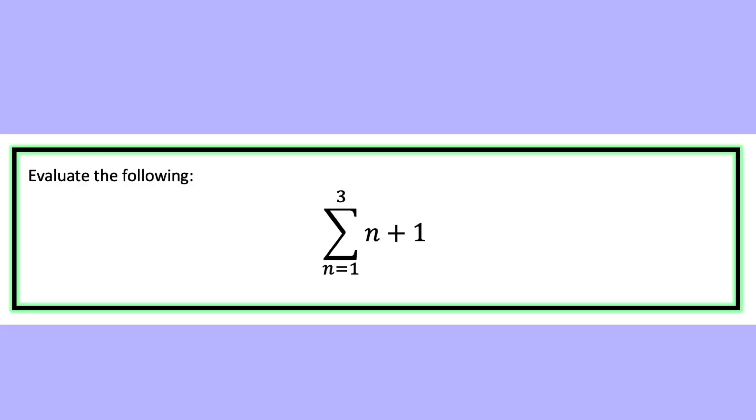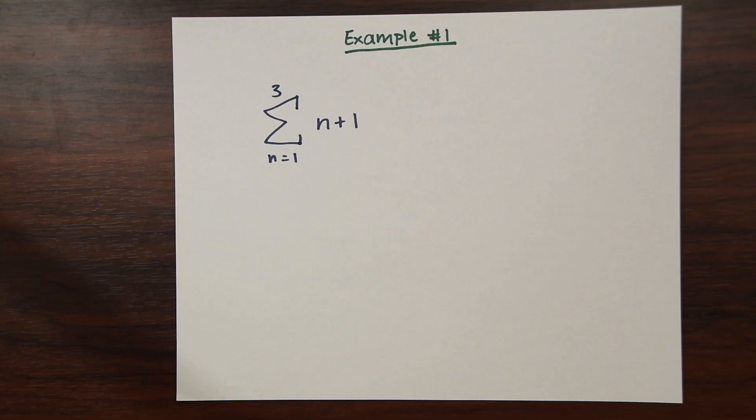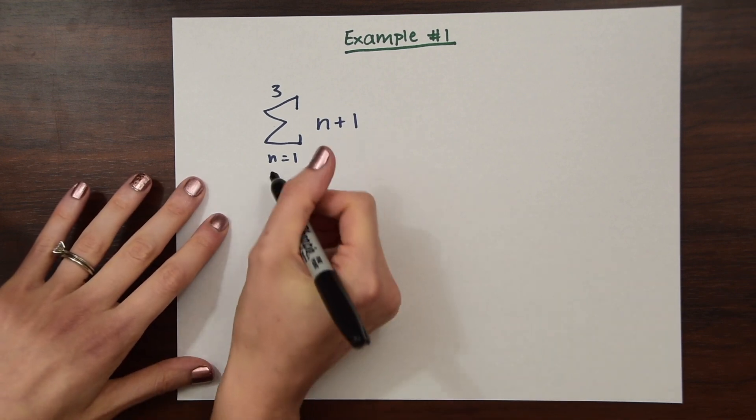So here is our first example. And it says evaluate the sum of n plus 1 from the value starting at 1 to 3. So this is the same example we were just looking at, but now we're actually going to solve it.